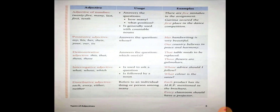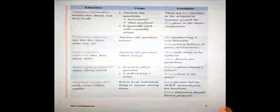If a singular thing is at a distance from us, we use that — for example, that fan is dangerous. If two fans are at a distance, then we use those — those fans are dangerous. So this and these are used for things near to us, while that and those are used for things at a distance. I think it is clear to everybody.